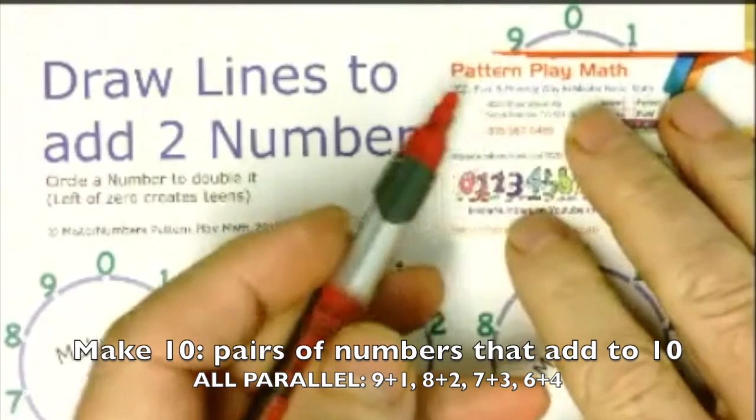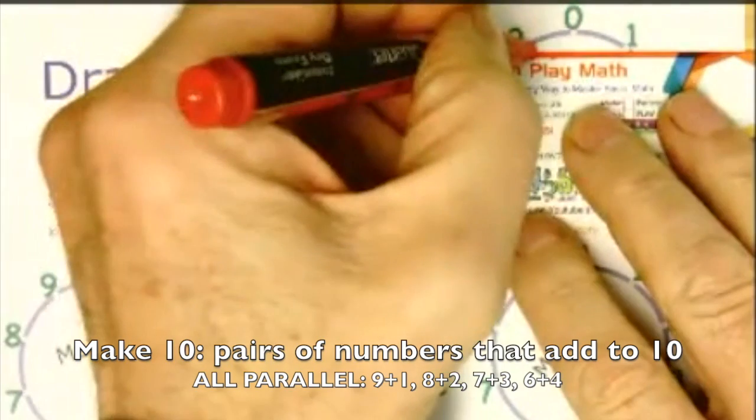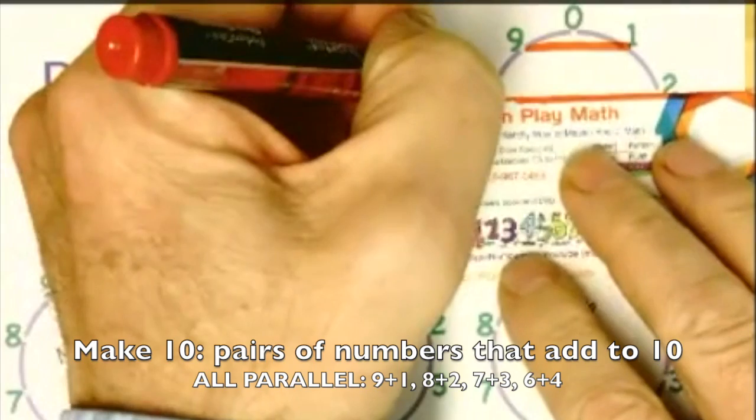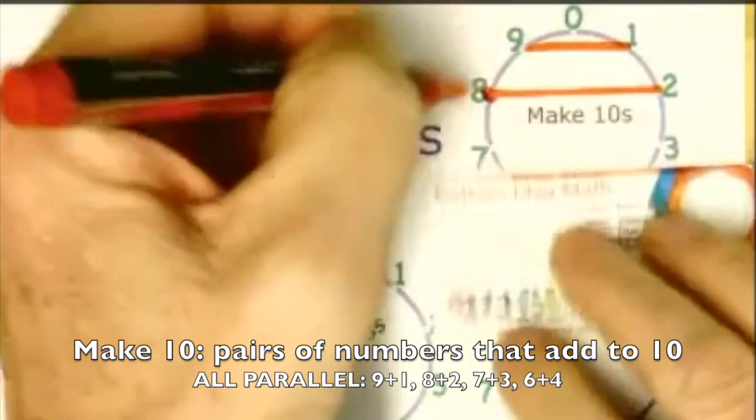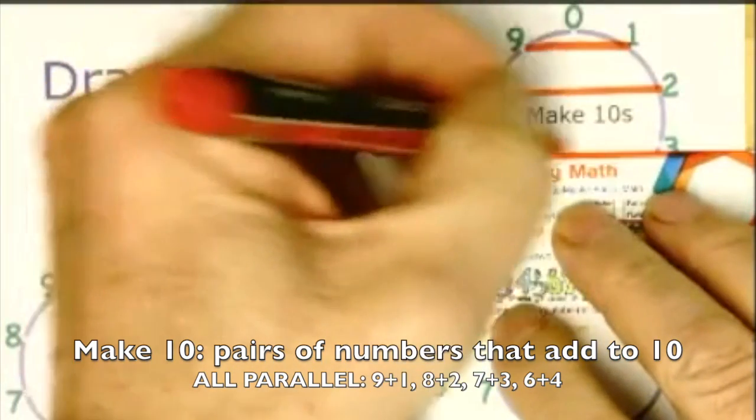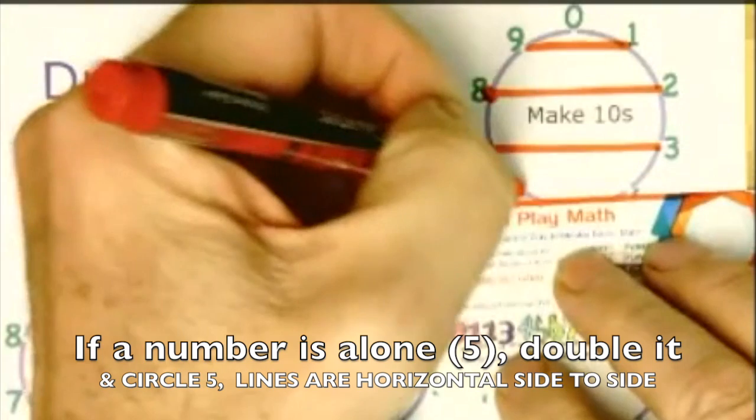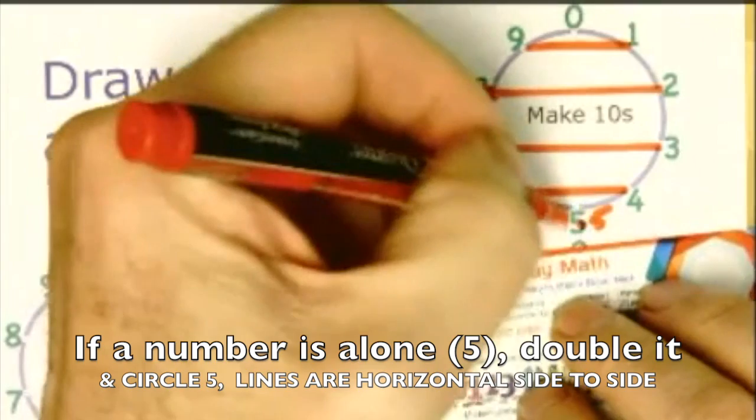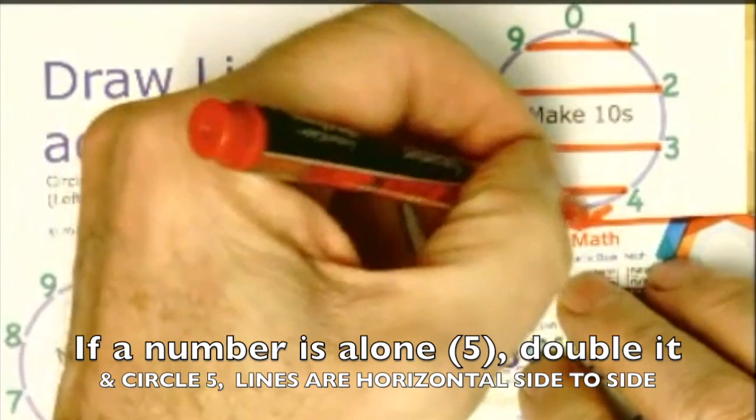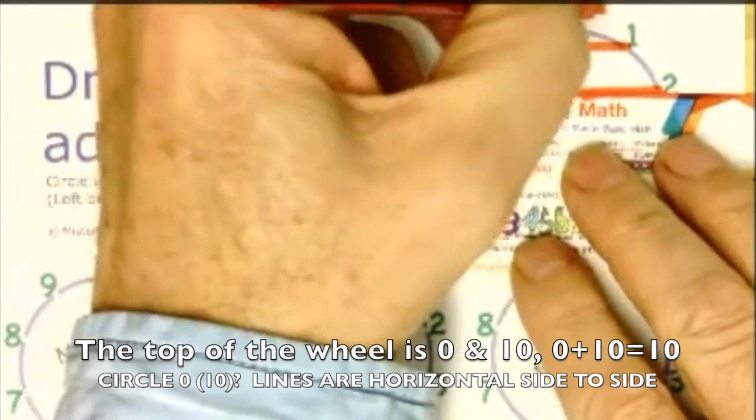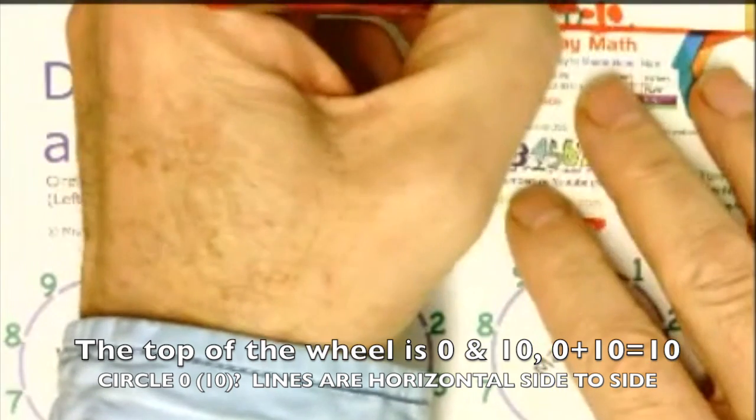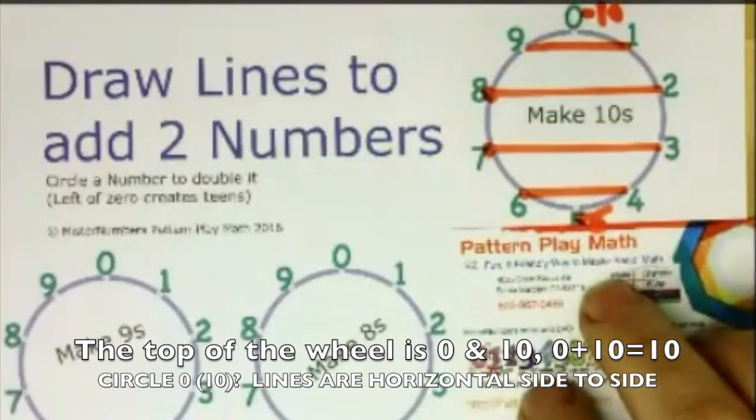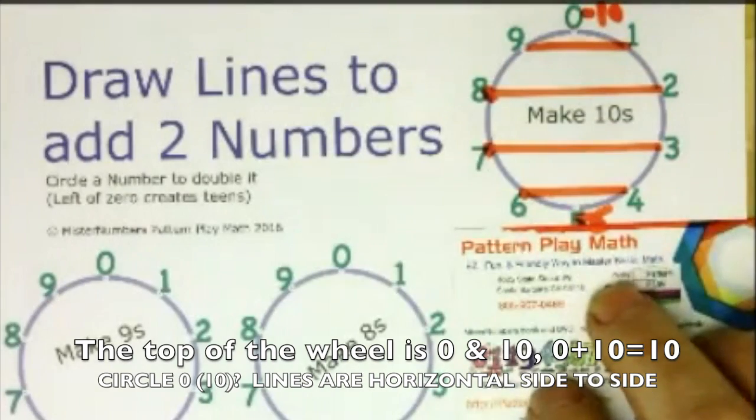The top one is numbers that it says make 10s right here. So the numbers are 9 and 1, 8 and 2, 7 and 3, 6 and 4, and then 5 and 5. We'll just put another 5 there, and also 0 and 10. That's both 0 and 10, and so all those parallel numbers all make 10s.